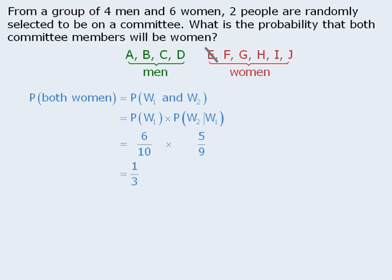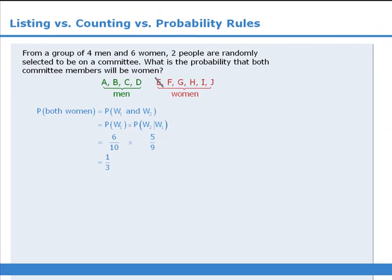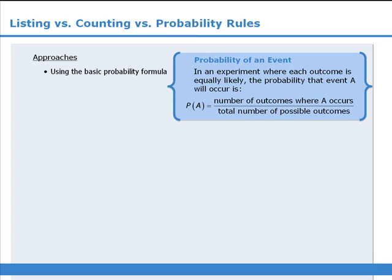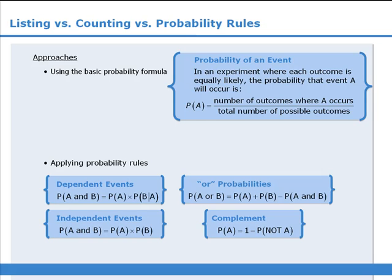So which of the two solutions was the best? It's hard to say — they both probably took the same amount of time to complete. The important point is that we were able to solve both questions using more than one approach, so keep that in mind whenever you encounter a probability question. To summarize, in this lesson we examined two primary approaches for tackling probability questions: using the basic probability formula, and applying probability rules.